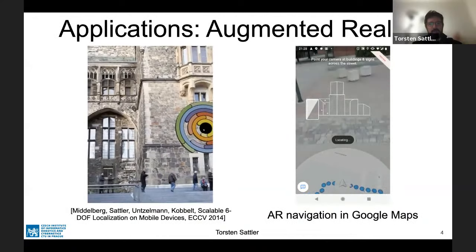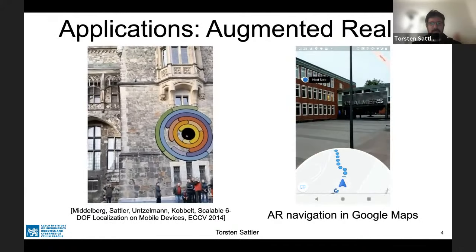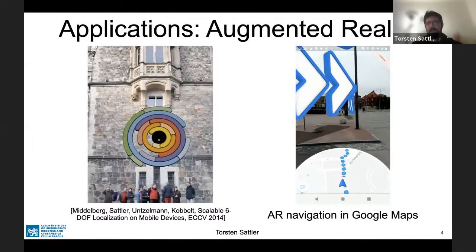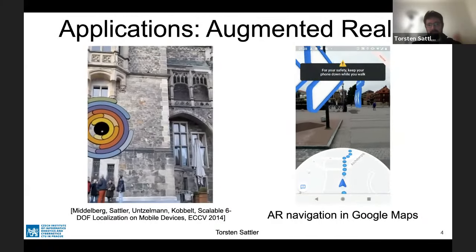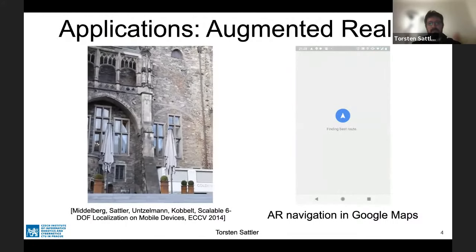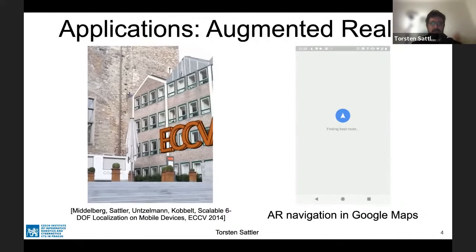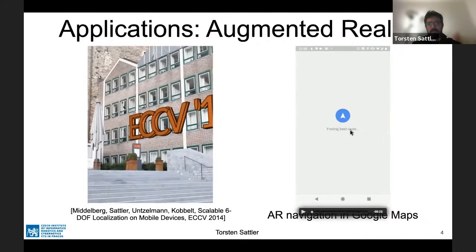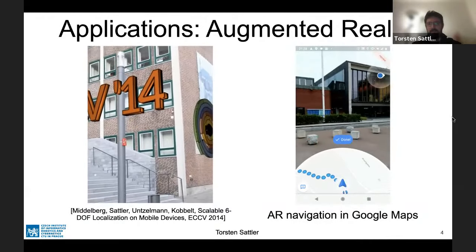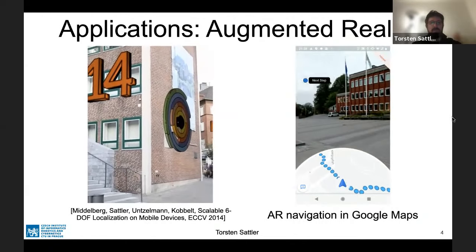Another application is augmented reality. You'll see two examples here: on the left, something we published at ECCV 2014; on the right, an example screen capture from the AR navigation feature in Google Maps. In both cases, you see virtual content overlaid into the user's field of view to provide additional context or information. This is done by figuring out where the user is with respect to some 3D scene representation. The additional content is defined in this 3D coordinate system, and once you know where the user is, you can reproject all this 3D information into the field of view.